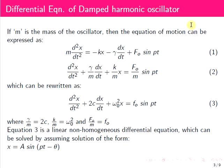If m is the mass of the oscillator, then the equation of motion can be expressed as m d²x/dt² equals the sum of the forces: minus kx, minus gamma dx/dt, plus F₀ sin(Pt). This can be rearranged as d²x/dt² plus (gamma/m) dx/dt plus (k/m)x equals (F₀/m) sin(Pt). This can be further written by substituting gamma/m equal to 2c, where c is a parameter that depends on the damping coefficient.